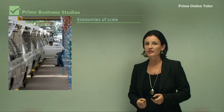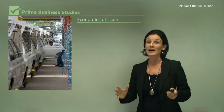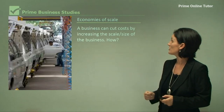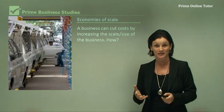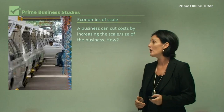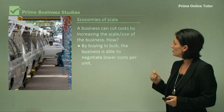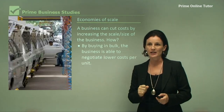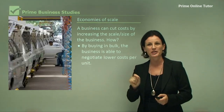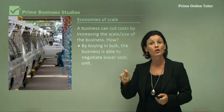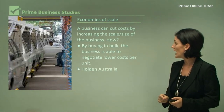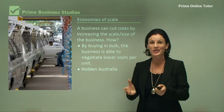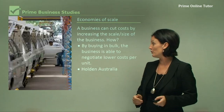Economies of scale is very important for global and large-scale businesses. Economies of scale means that a business can cut costs by increasing the scale and size of the business. They buy in bulk. If you buy one tonne of steel and then you buy 15 tonnes of steel, it is much cheaper to buy the 15 tonnes because it's cheaper per unit. And you're able to negotiate the price with your supplier — your supplier is going to want to sell you more, so they will reduce the cost for you.